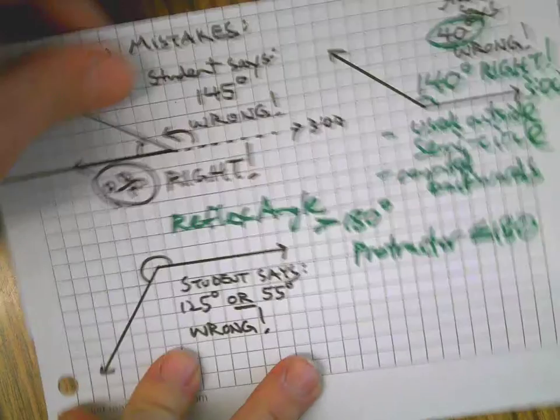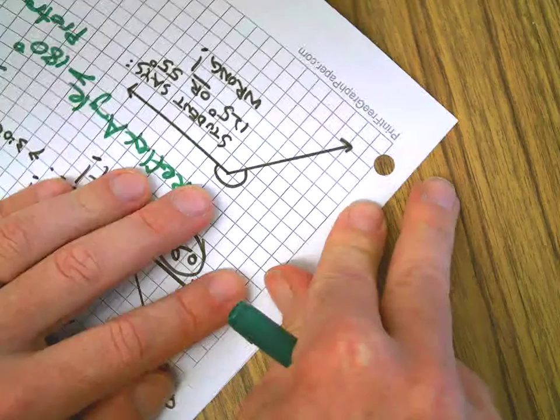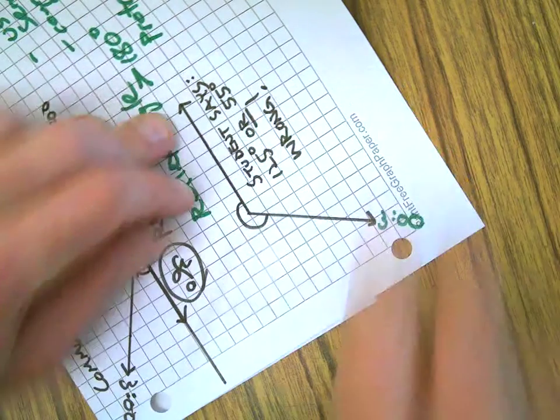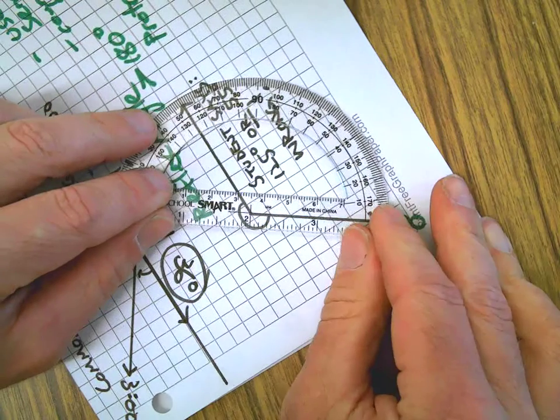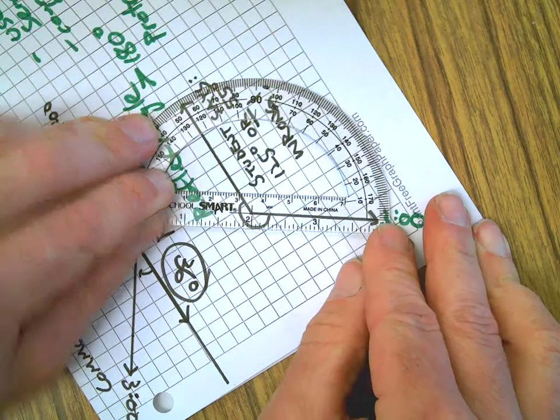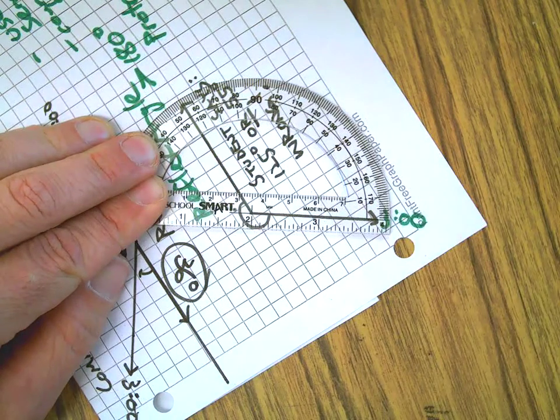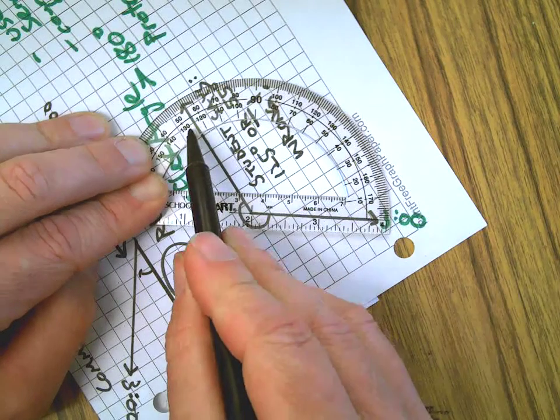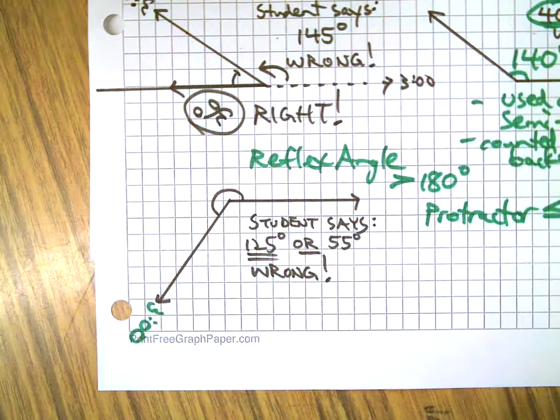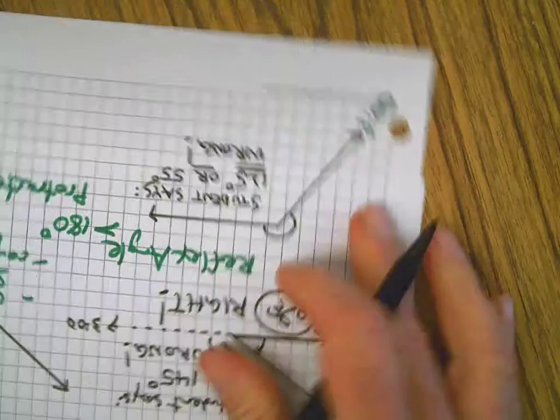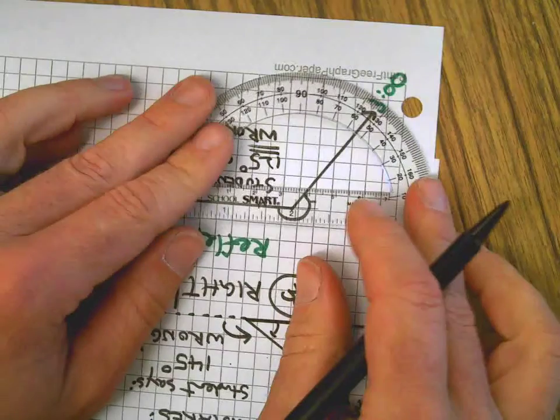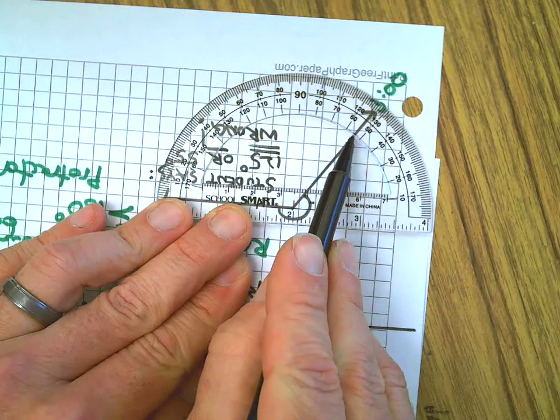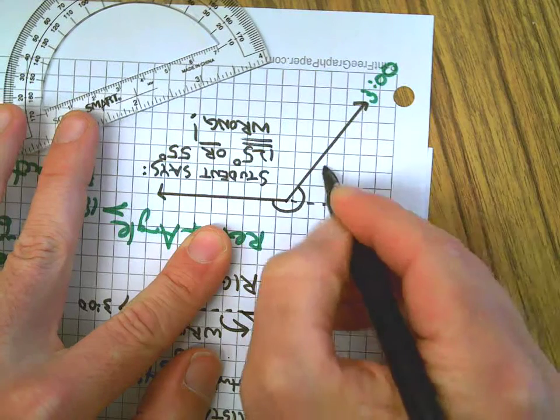If the student says 125 or 55, here's what they did: maybe they spun it around like this - good strategy, make it look like three o'clock. Then they measured. These tiny ones are really good - you don't have such a long line. Get a tiny protractor if you can, it works better in school. Then they measured 10, 20, 30, 40, 50 - and see right there, 125. I can understand how they got 125.